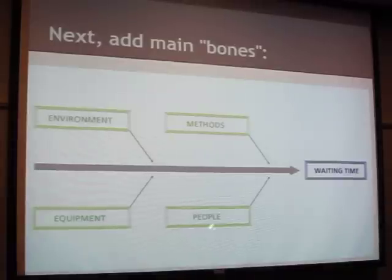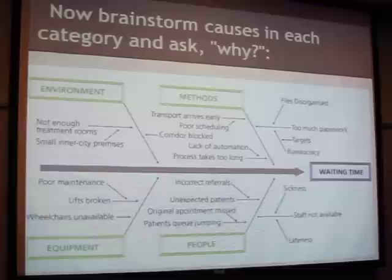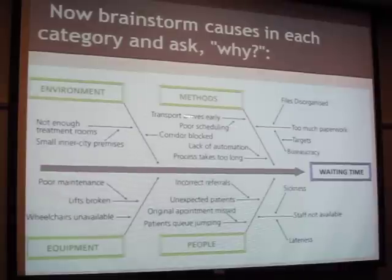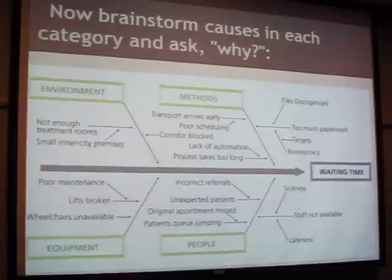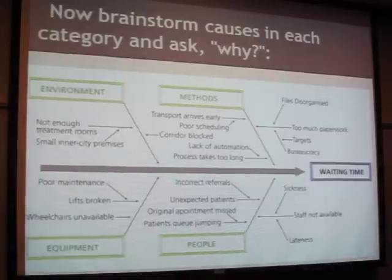There are main bones - standard categories that problems can fall into. There are five we'll use: you can have a problem with people, equipment, environment, methods, and materials. Once you have these big categories, your team sits and brainstorms - every idea you throw out, you try to figure out what category it falls into. Then you brainstorm further on subcategories, asking why, why, why for every idea that might be a problem, drilling down level after level to the real root of the problem.